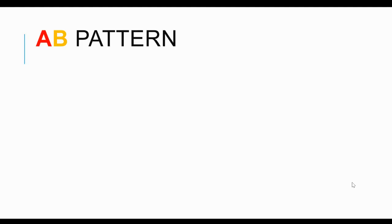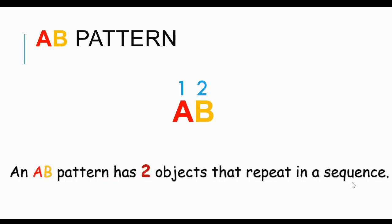First we're going to be looking at an A-B pattern. We've been working on A-B patterns all year long. An A-B pattern has one, two objects. One object goes first and the next object goes second. An A-B pattern has two objects that repeat in a sequence. The two objects we're going to use are shapes — a star and a heart. So let's make a star-heart A-B pattern.